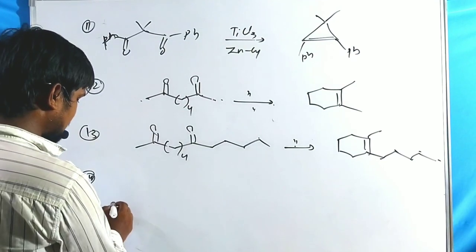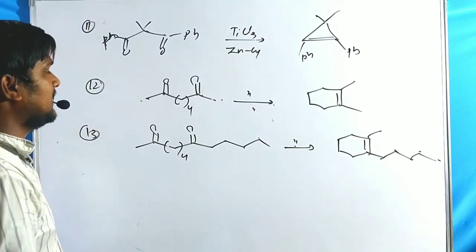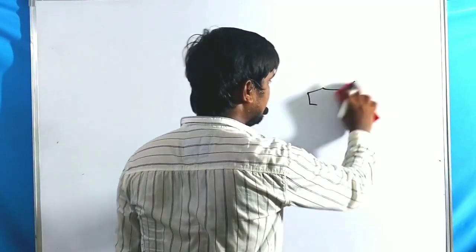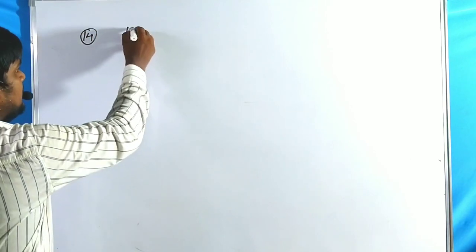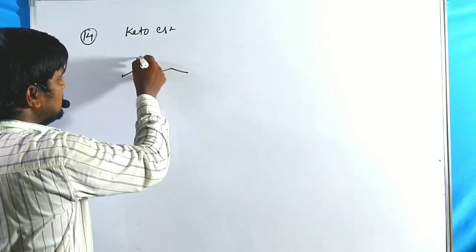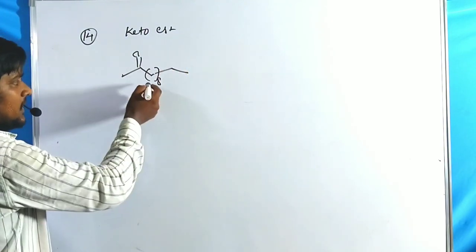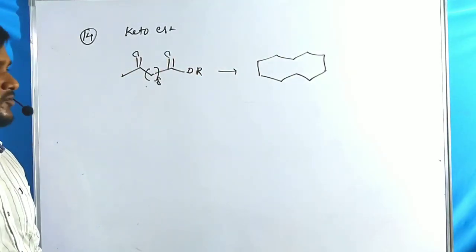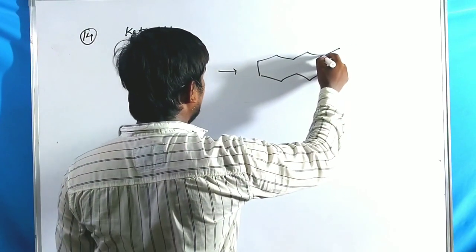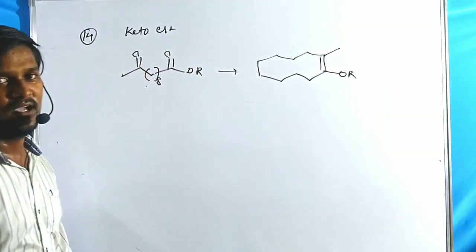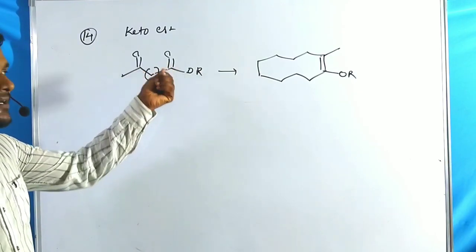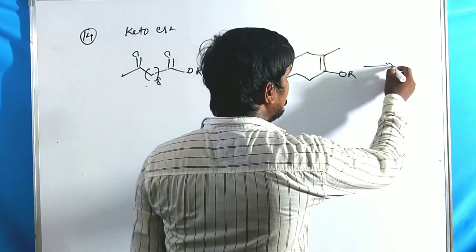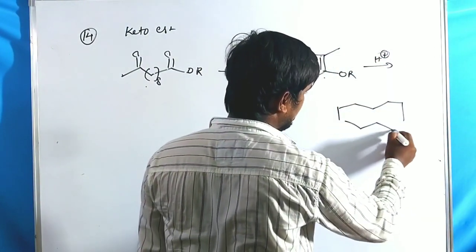For keto-ester examples: a keto-ester compound with an 8-carbon chain and an ester group (total 10 atoms) forms a 10-membered trans ring via McMurray Coupling. One position gives a double bond with methyl on one side and O-R on the other. Upon hydrolysis, the enol ether gives the ketone. This is the keto-ester functionality example — 1+8=9, 9+1=10, ring size is 10.